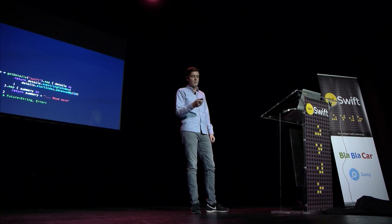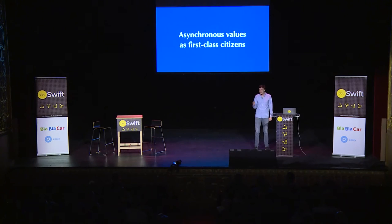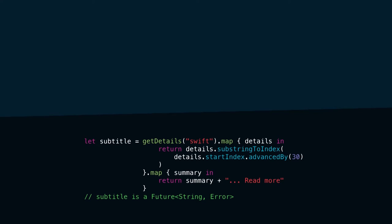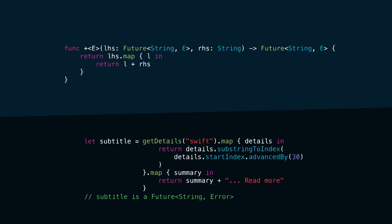This already is really powerful, and this is what you can do with the current version of Swift with a library like Bright Futures or PromiseKit. But at the same time, it also adds quite some boilerplate code — everything you're doing has to be inside this map, and there are a lot of extra characters. So I'd like to experiment and see how we can take this a step further — with the current version of Swift, how we can make asynchronous values first-class citizens. What we can do is define an overload of the plus operator that works for a future string and a regular string.